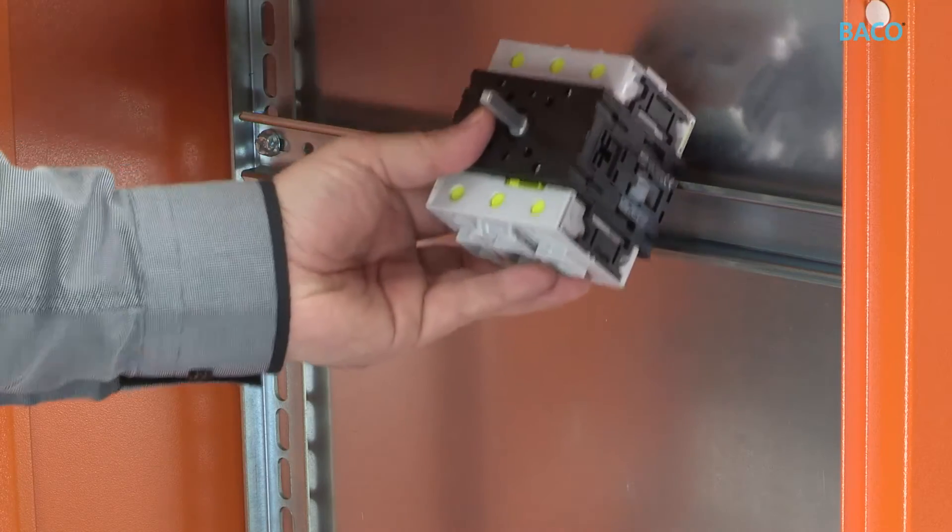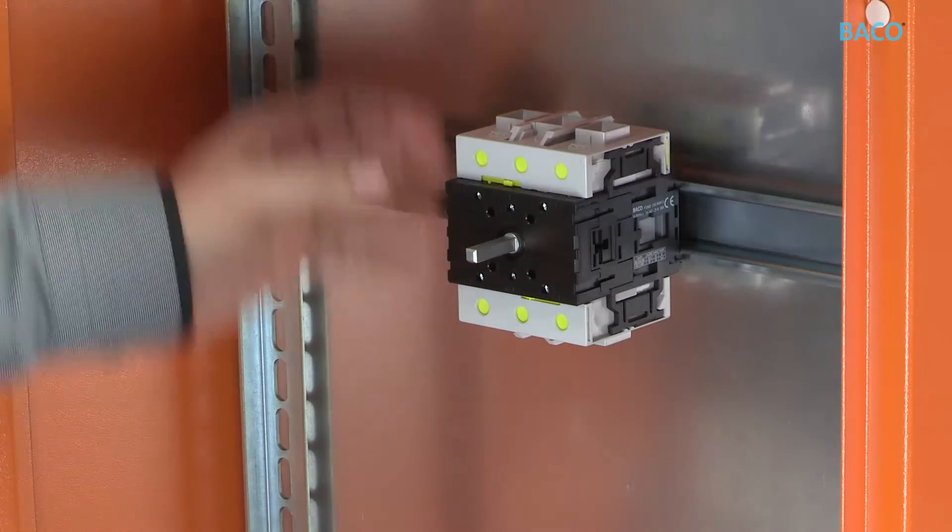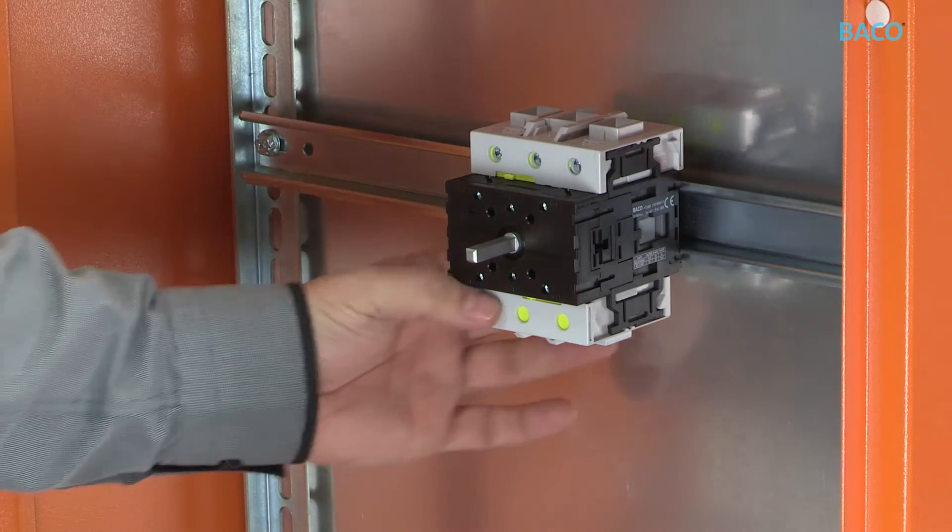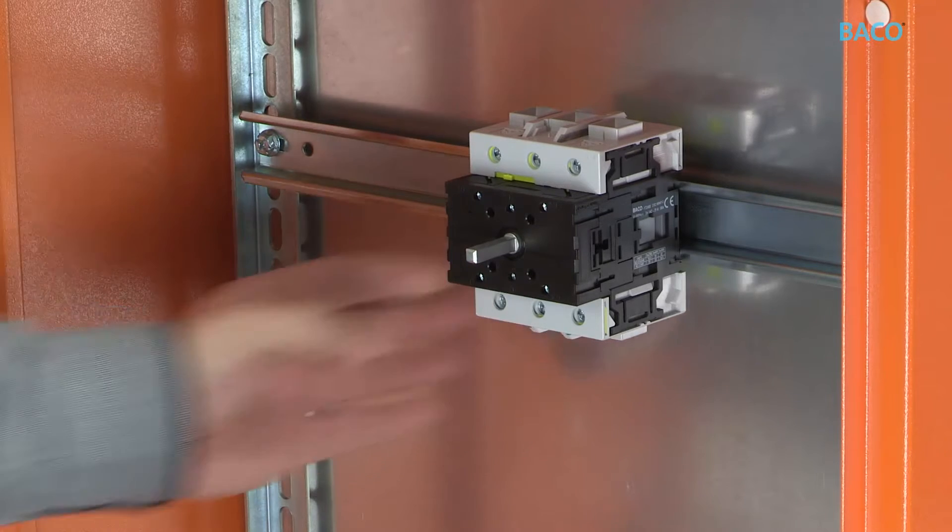For rear mounting assembly, take the three pole main block and slide the terminals to the front. Then snap it onto the DIN rail with a vertical circular motion.